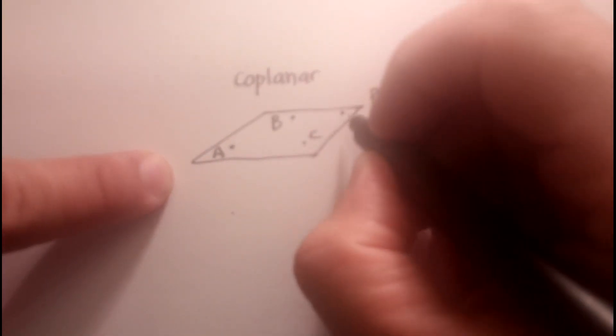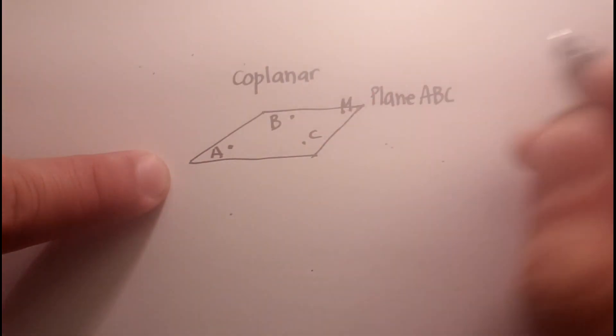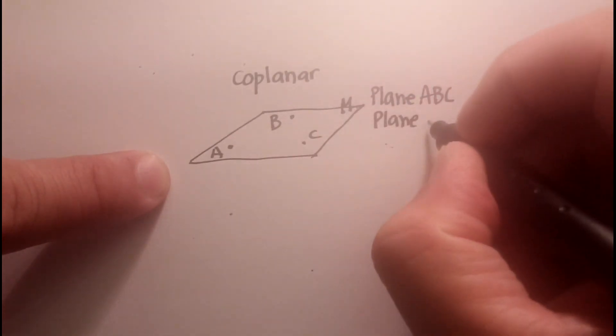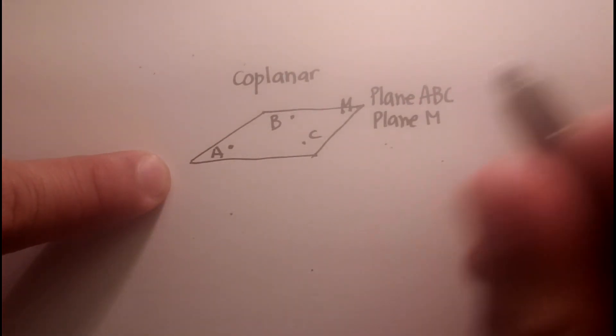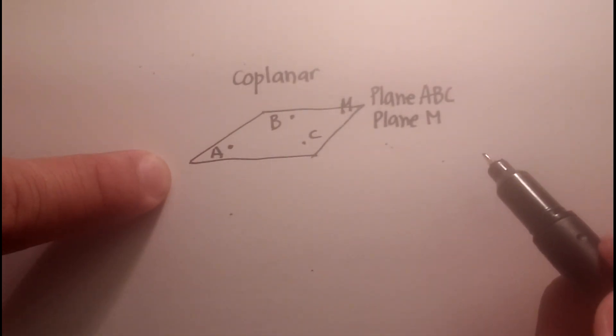I could put another little designation up here. And it's not even a dot, actually. I shouldn't have done that. But let's say I could call this M. So this could be called also plane M. But A, B, and C are coplanar because they rest on the same plane.